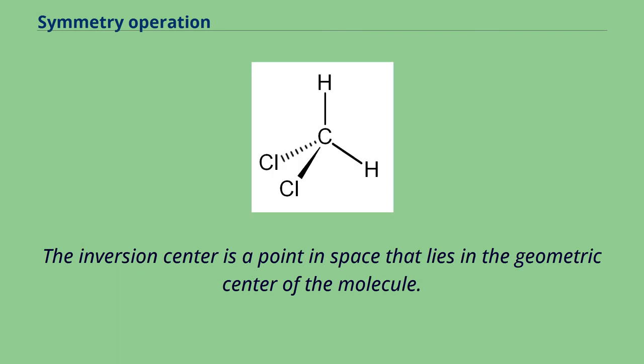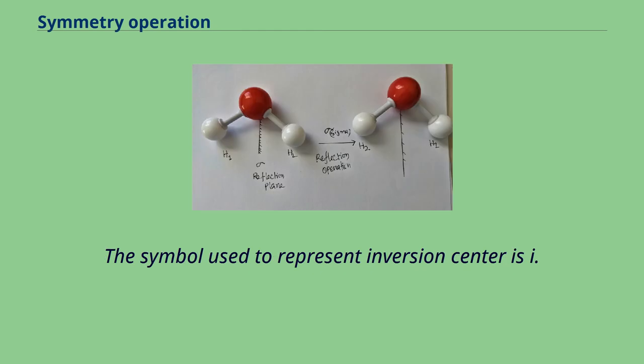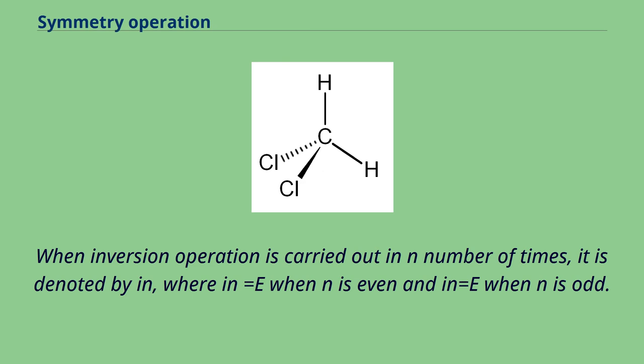The inversion center is a point in space that lies in the geometric center of the molecule. As a result, all the Cartesian coordinates of the atoms are inverted. The symbol used to represent inversion center is I. When inversion operation is carried out N number of times, it is denoted by I^N, where I^N equals E when N is even and I^N equals I when N is odd.